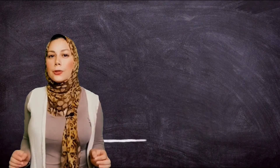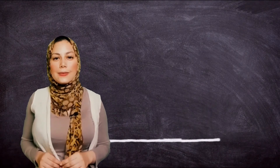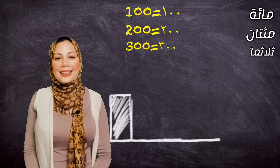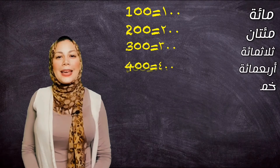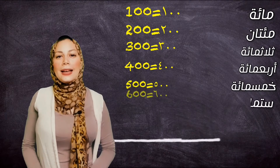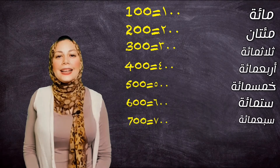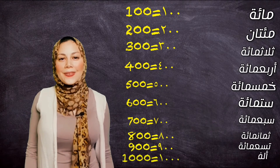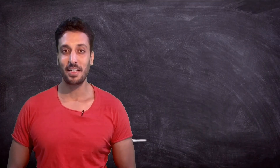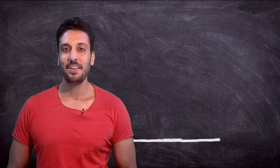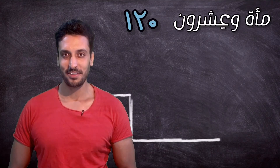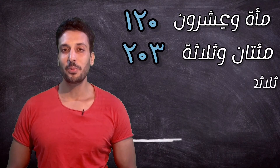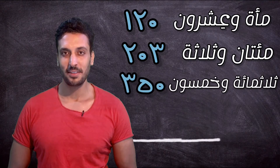And now the numbers from 100 to 1000: 100, 200, 300, 400, 500, 600, 700, 800, 900, 1000. If you want to add any number to the hundreds category, you will say it like this: 120, 200, 250, 300, 350, 450, 472.